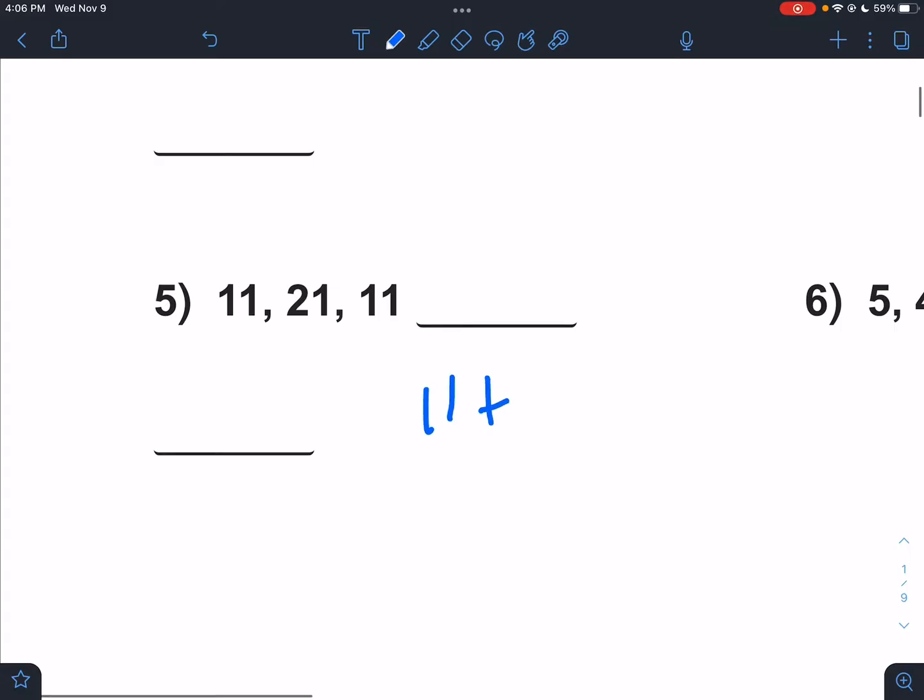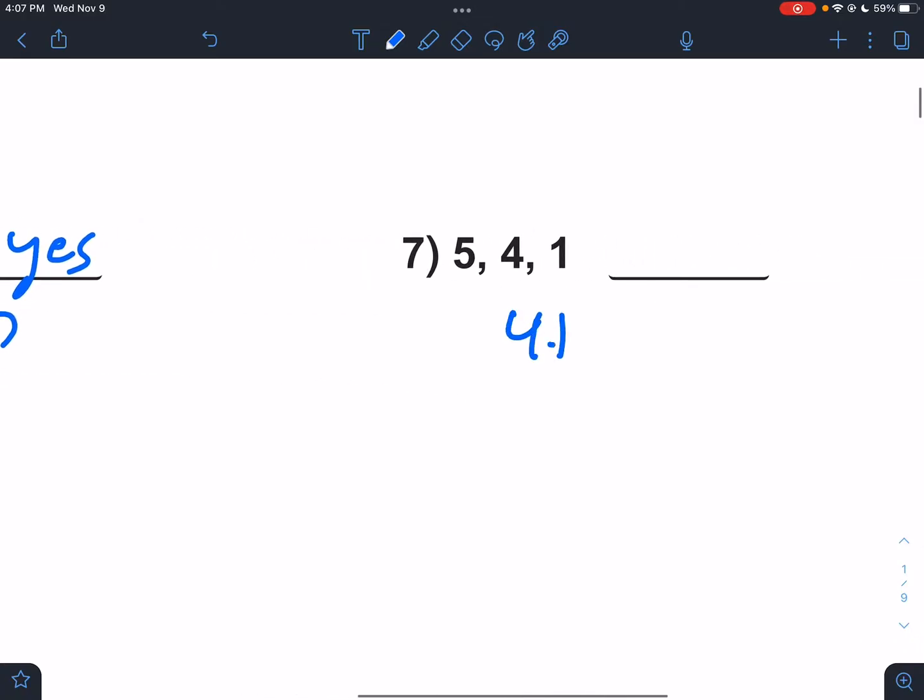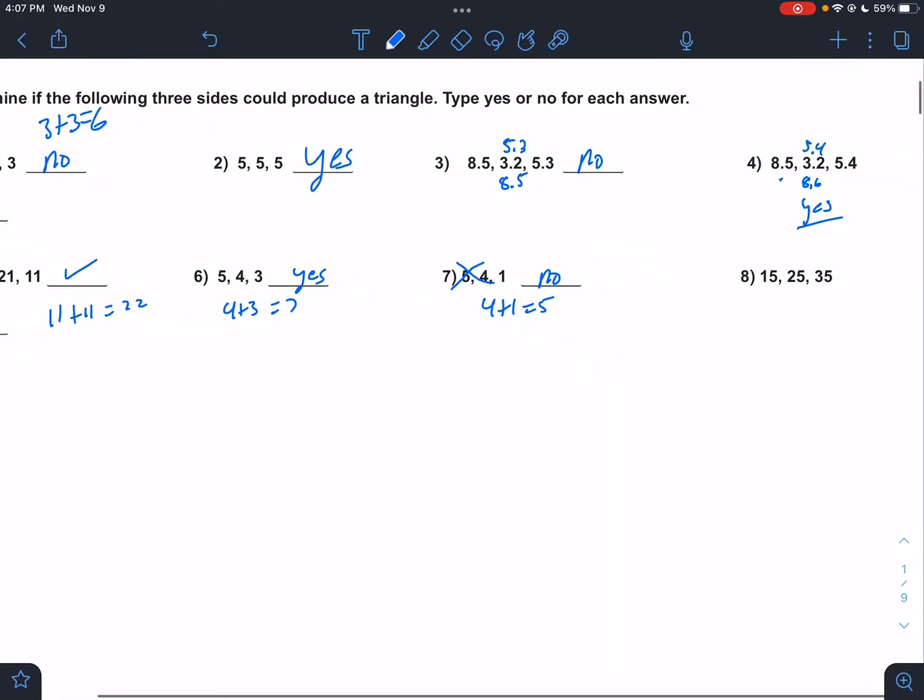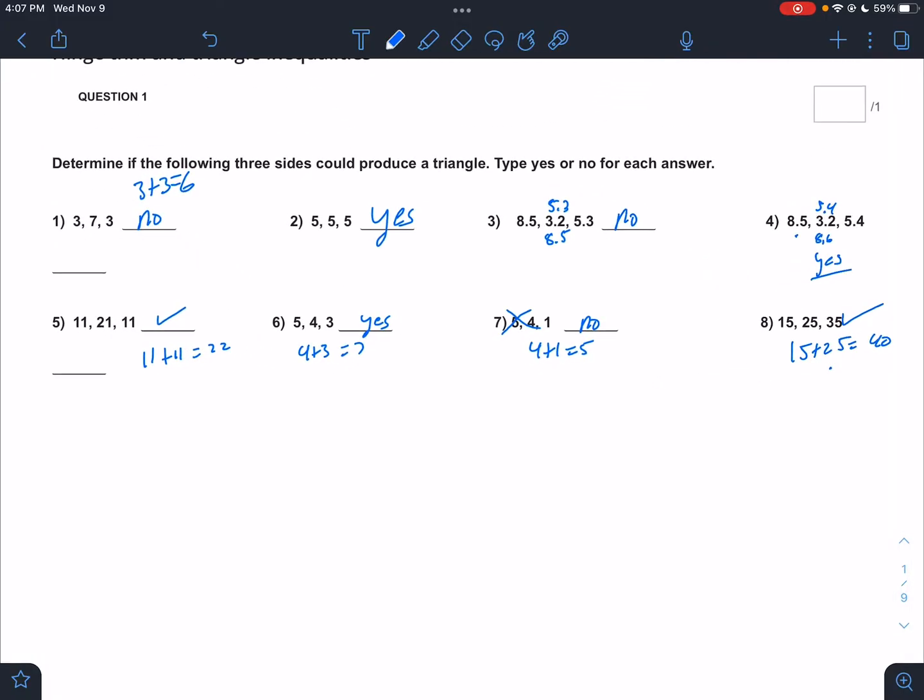Let's go, 11, 11, and 21. Well 11 plus 11 is 22, that's good enough for me, yes. 4 plus 3 is 7, 7's more than 5, yes. 4 plus 1 is 5, 5 is not more than 1, no. And 15 plus 25 is 40, yes, done.